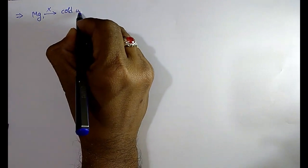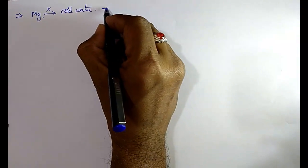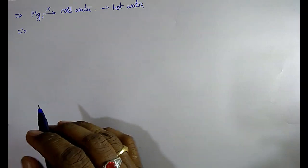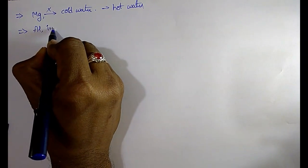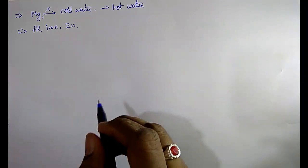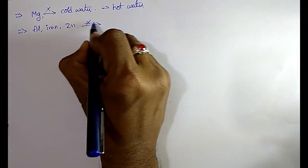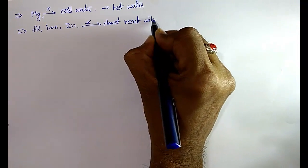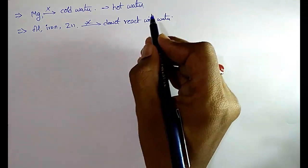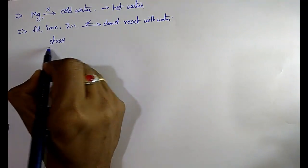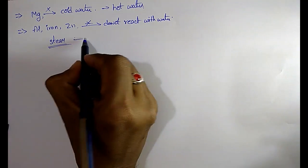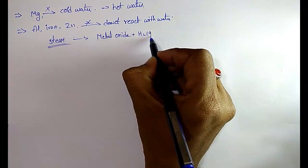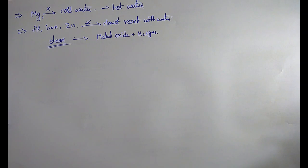Magnesium reacts only with hot water. Aluminum, iron, and zinc do not react with water at all, but they react with steam and form metal oxide and hydrogen gas.